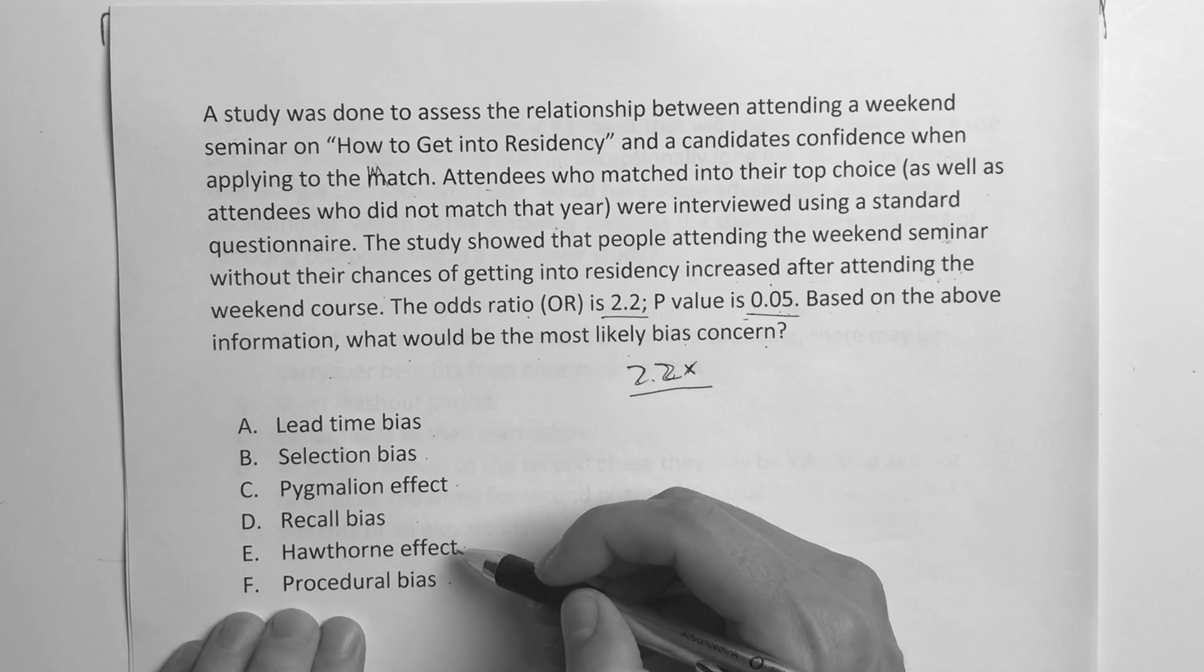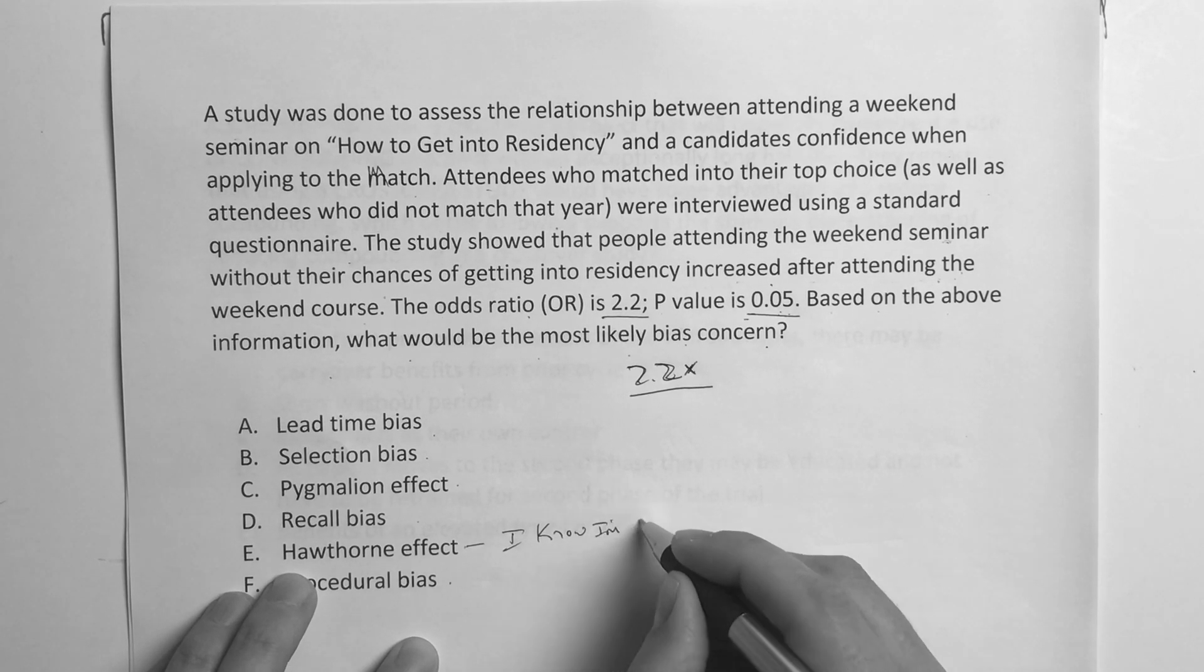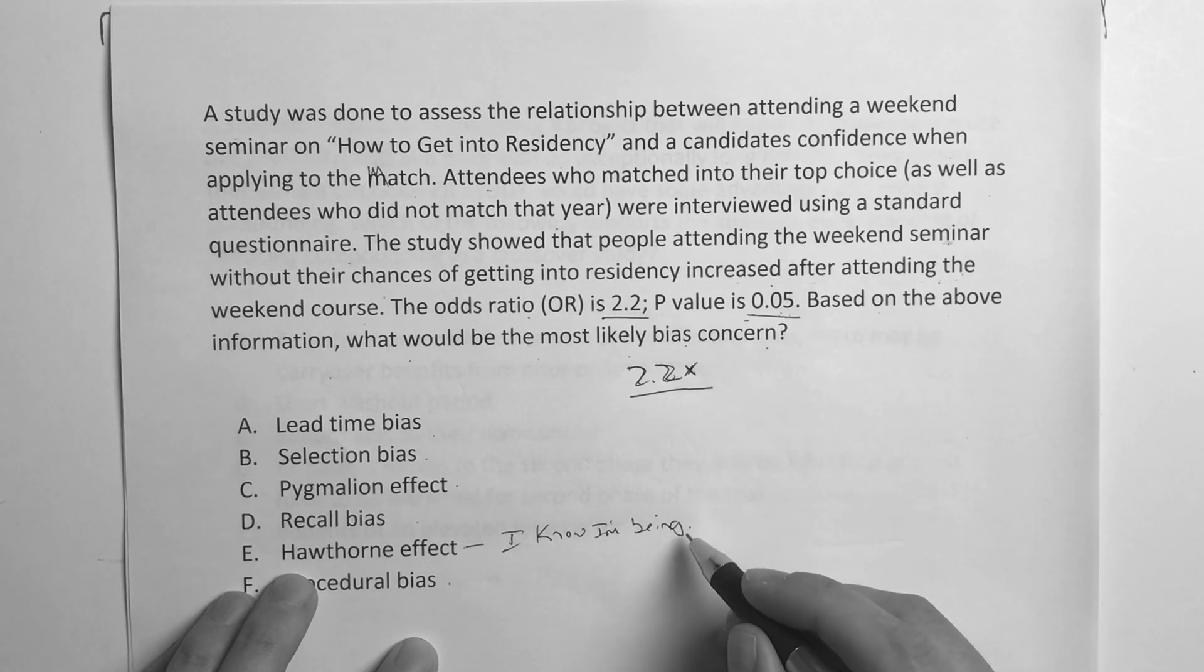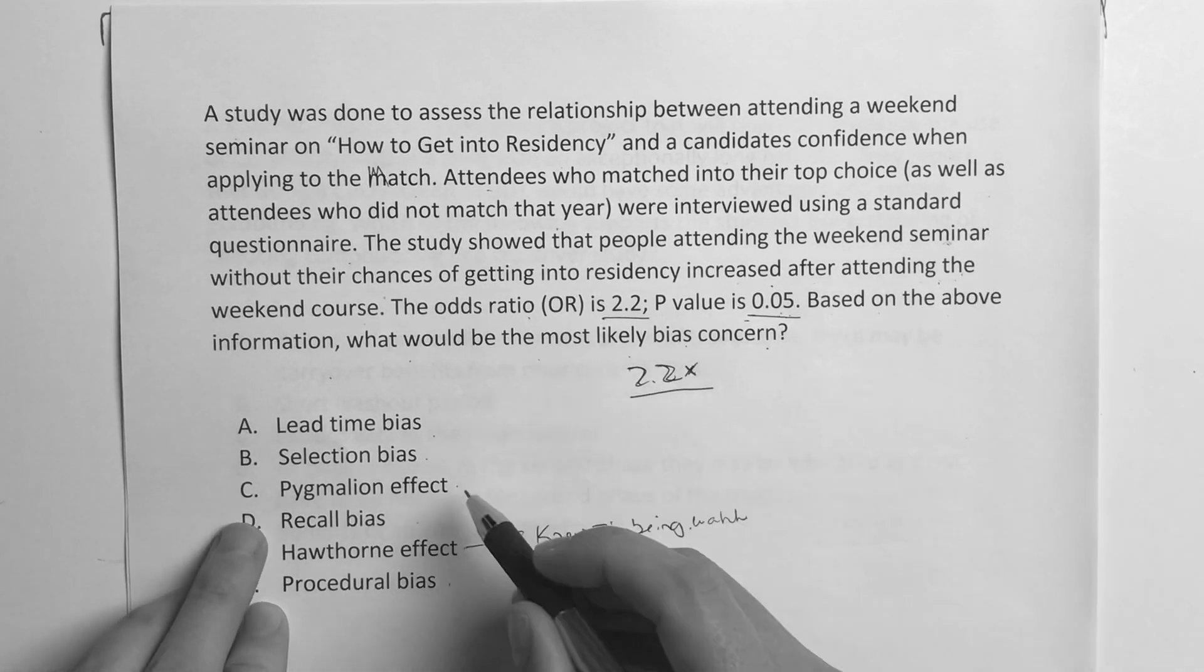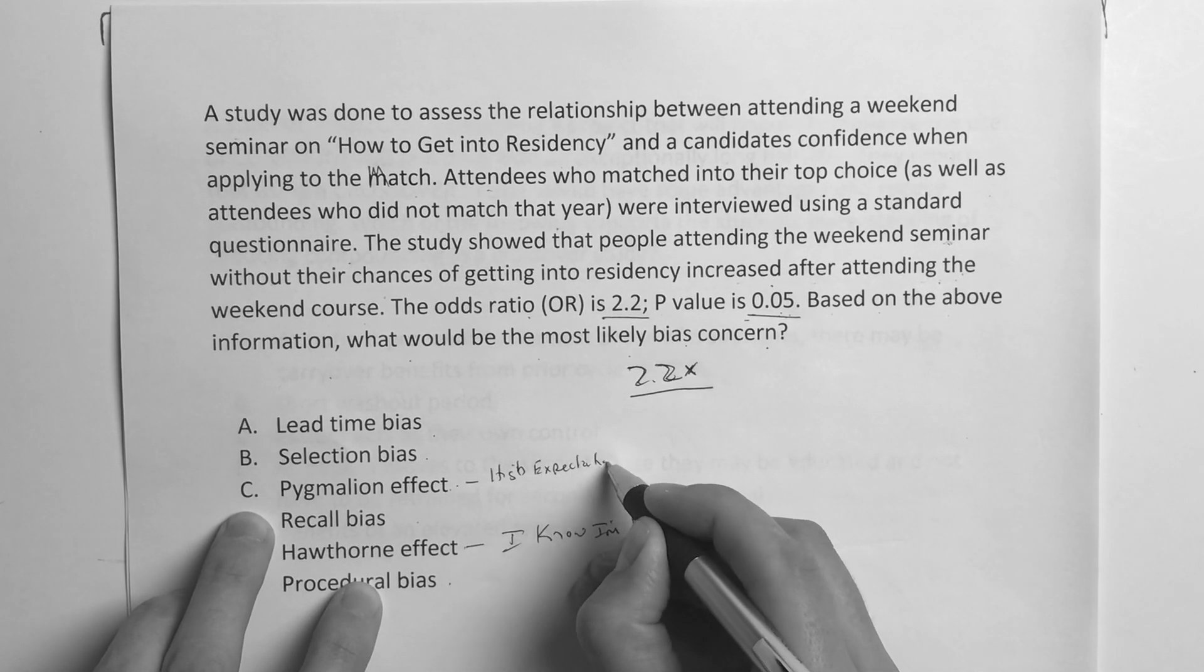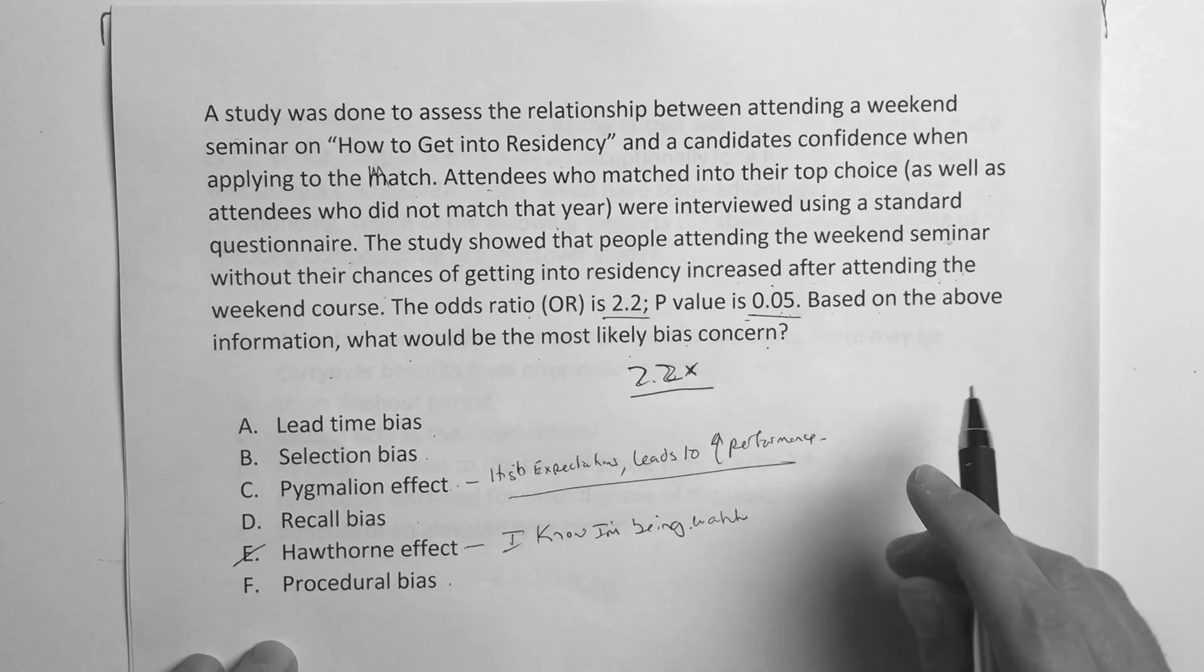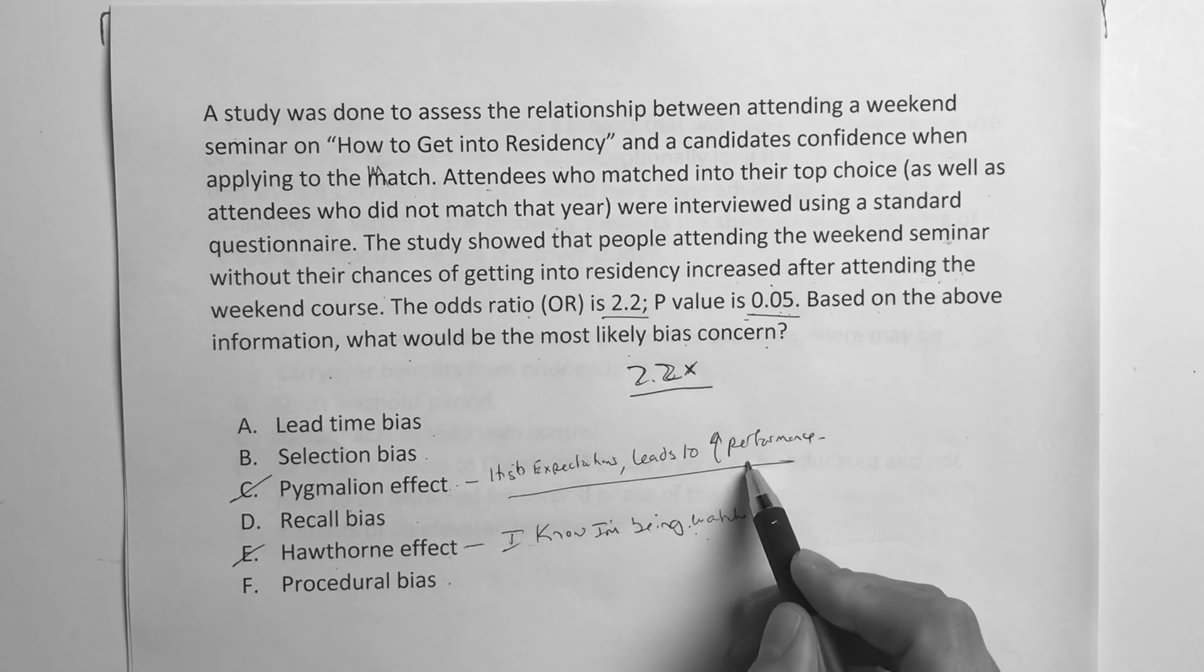Now obviously some of these just flat out don't even fit. Hawthorne is that one where you're being observed. I know I'm being watched and it's going to influence how I act. Like if it's a vitamin study, their chances are they're going to start eating healthier. So we know in this situation it's not the hawthorne effect because these guys aren't being watched. And then the pygmalion effect, that's just essentially saying if I set high expectations, that leads to an increased performance.